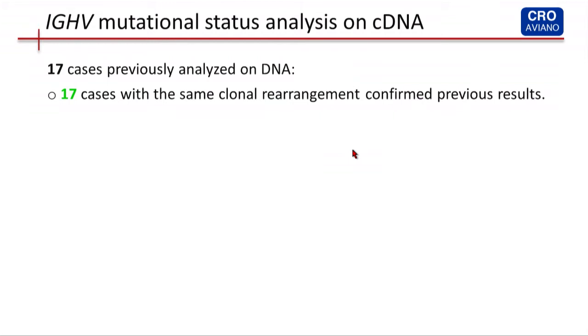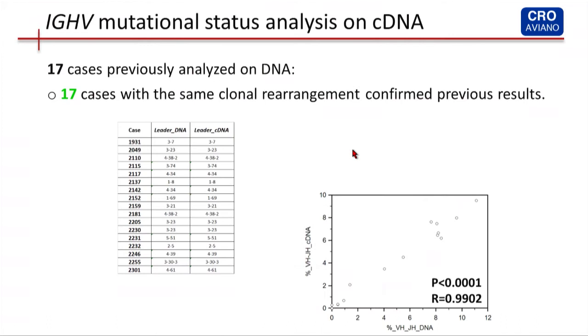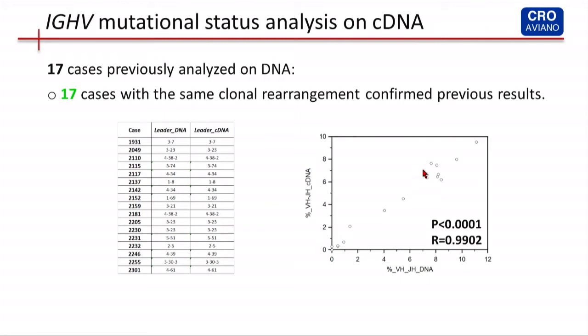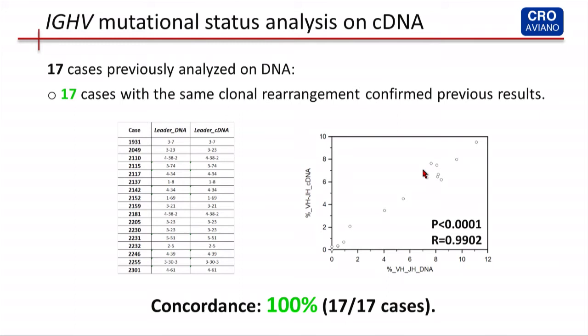We analyzed 70 cases previously analyzed with the Lymphotrack assay on DNA. For these 70 cases analyzed on cDNA, again with the Lymphotrack assay, we found the same clonal rearrangement that confirmed previous results — both in terms of IGHV gene assignation and percentage of mutation — with a concordance of 100%.